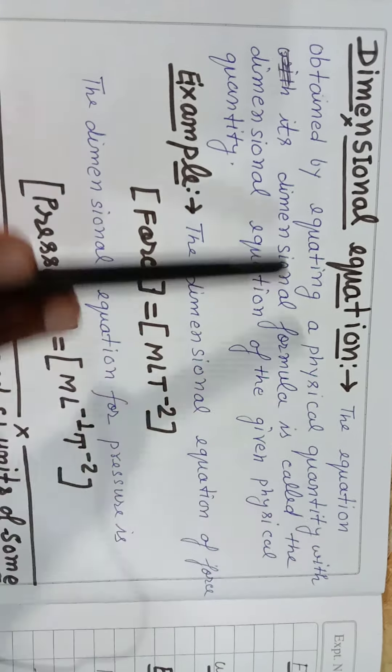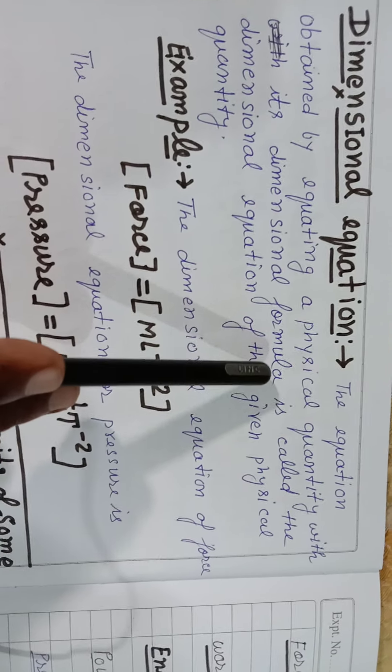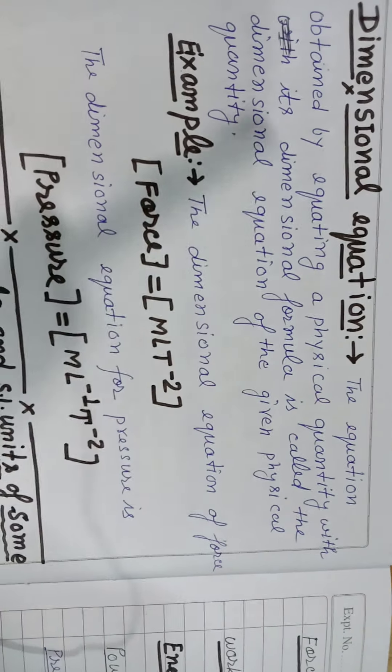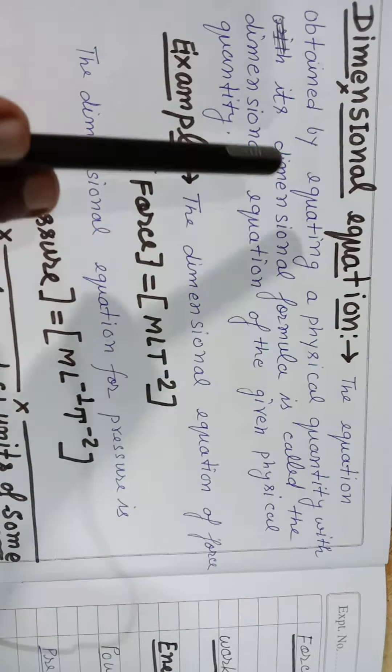किसी भी physical quantity और उसके dimensional formula से हम equate करके, equalize करके जो equation obtained होता है उसको बोलते हैं dimensional equation। इसमें किसी physical quantity और उसके dimensional formula को हम equalize कर देते हैं और उससे जो equation obtained होता है उसको बोलते हैं dimensional equation। इसे for example लेते हैं।